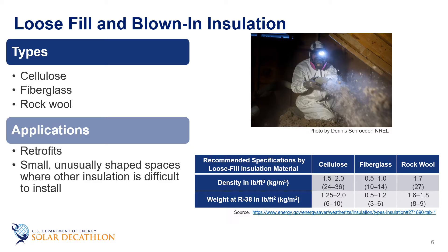Loose fill insulation consists of small particles of fiber, foam, or other materials. These small particles form an insulation material that can conform to any space without disturbing structures or finishes. This ability to conform makes loose fill insulation well suited for retrofits and locations where it would be difficult to install other types of insulation. The most common types used for loose fill insulation include cellulose, fiberglass, and mineral wool. As discussed in our insulation materials episode, all of these materials can be produced using recycled waste materials. The table here compares these three materials.